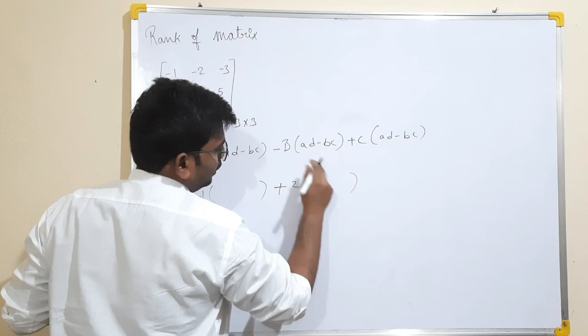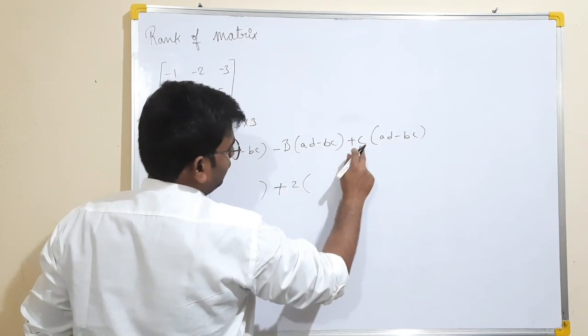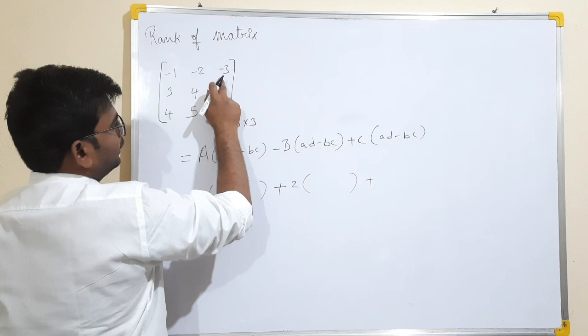Next, A, D minus B, C. Next, plus C — capital C and T, here.